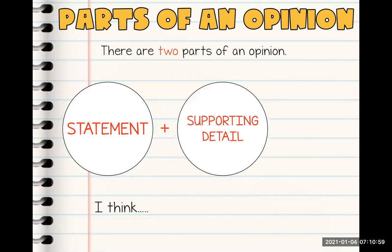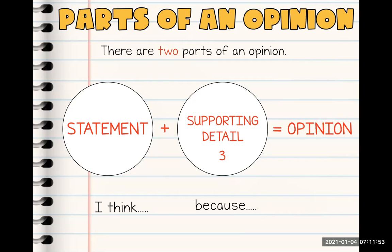The second part of your opinion is your supporting detail. Right now, because we're still learning about opinion writing and we've just started, some of our opinion writing pieces will only have one supporting detail. When we go deeper into the unit, you're going to have to have at least three supporting details. Now, what is the one word that is probably the most important when you're adding your detail? Yell it at me — 'because!' This word is so important. It's going to open up your brain so you can share why you think something, why you feel something, why you like or don't like something. You have to have the word 'because.' When you have your statement and your supporting details, that equals your opinion.